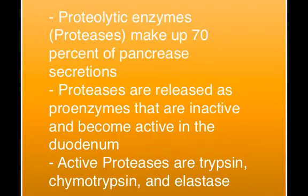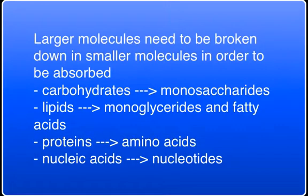The proenzymes secreted by the pancreas are trypsinogen, chymotrypsinogen, procarboxypeptidase, and proelastase. These become activated to chymotrypsin, carboxypeptidase, and elastase — you likely only need to know the activated forms. These enzymes attack the peptide bonds linking amino acids together. It's important to keep in mind that large macromolecules must be broken down into smaller molecules in order to be absorbed.